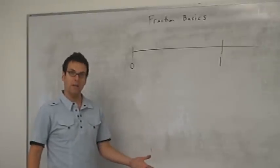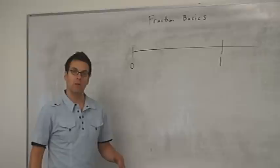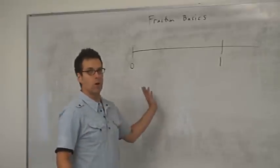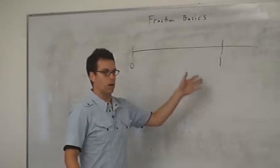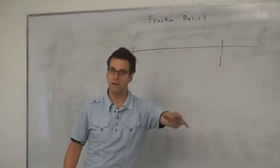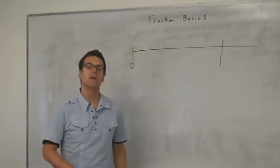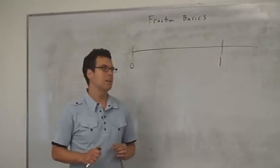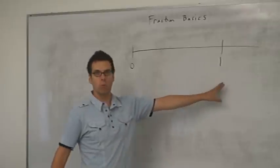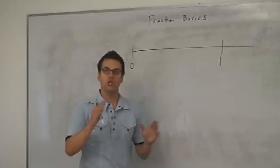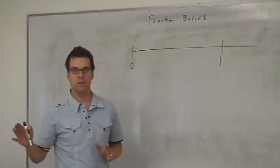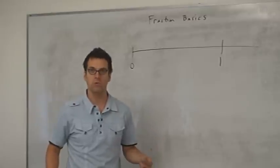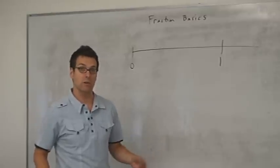At the beginning, a number line is used to model the whole numbers, starting with zero and going to the right: one, two, three, et cetera. If we wanted to talk about fractions, we can talk about taking the interval from zero to one and chopping it into an equal number of pieces. This is going to be what we eventually refer to as fractional units.